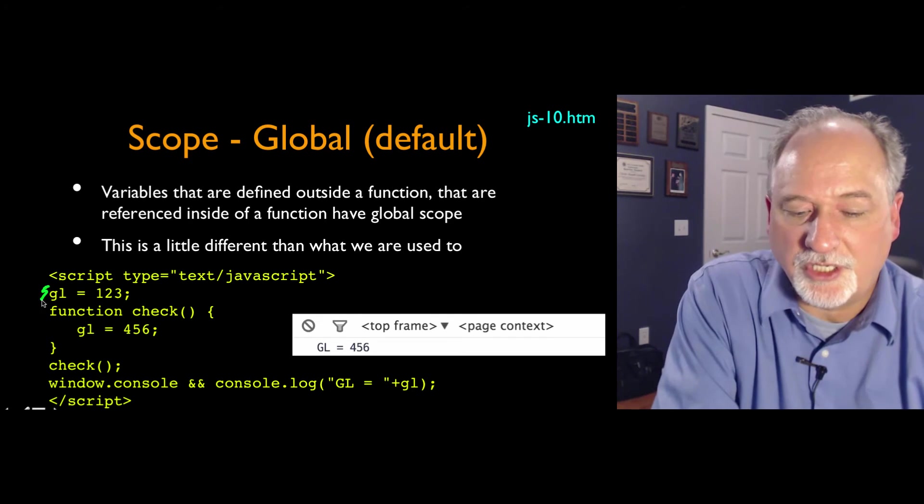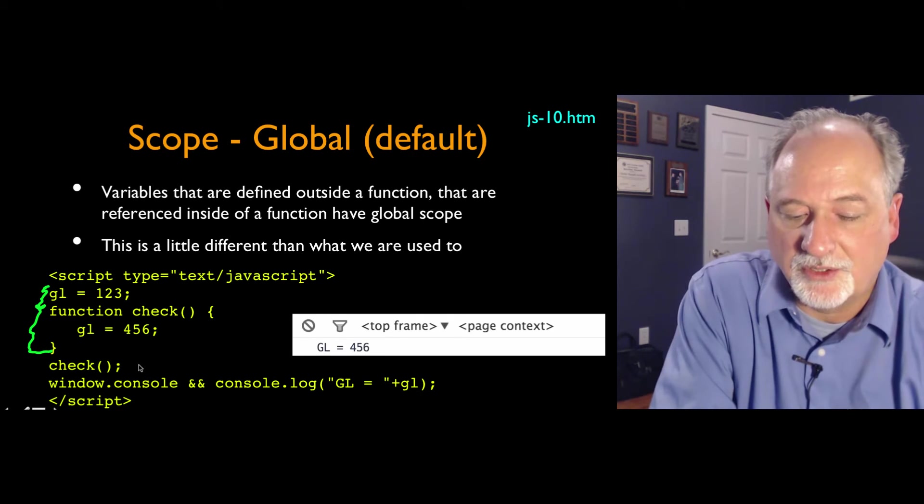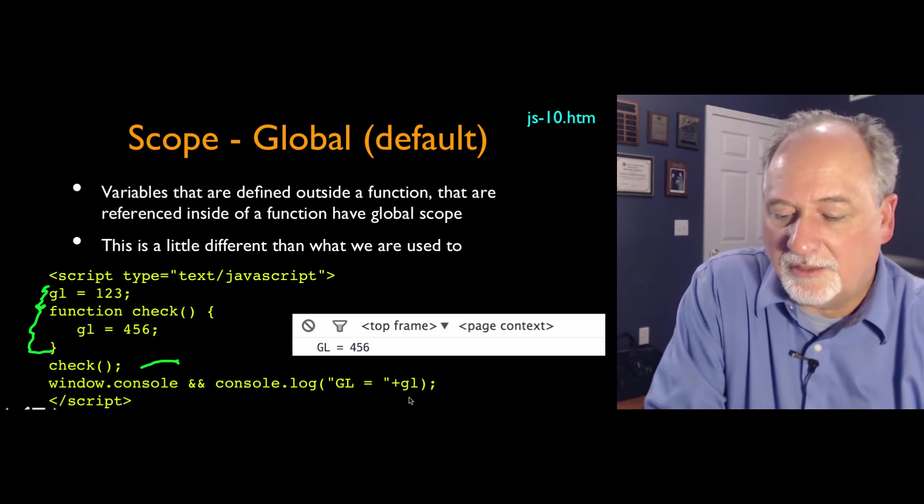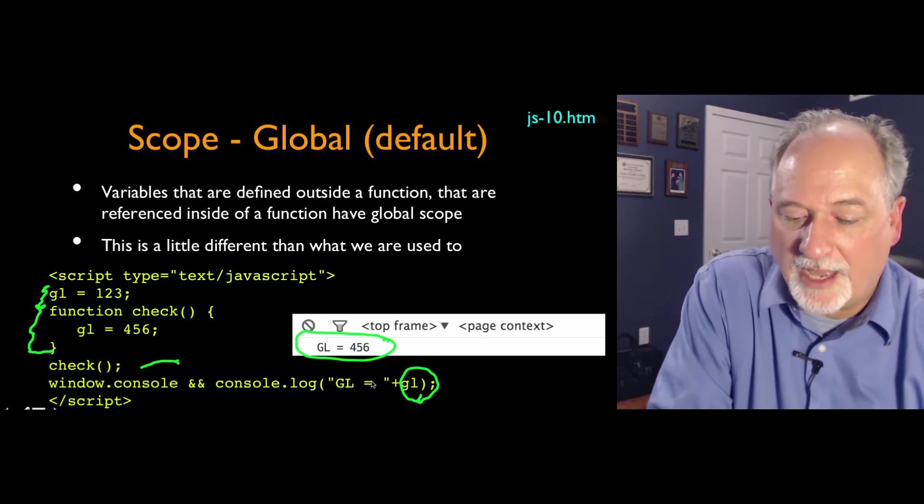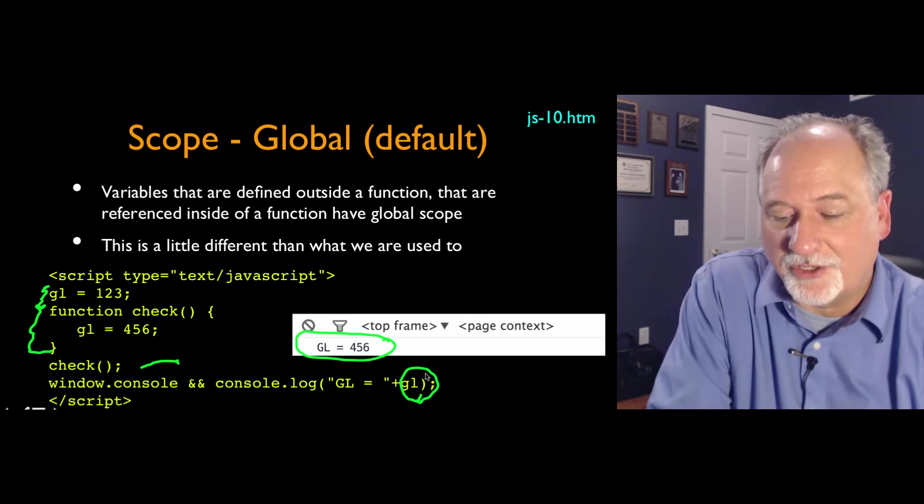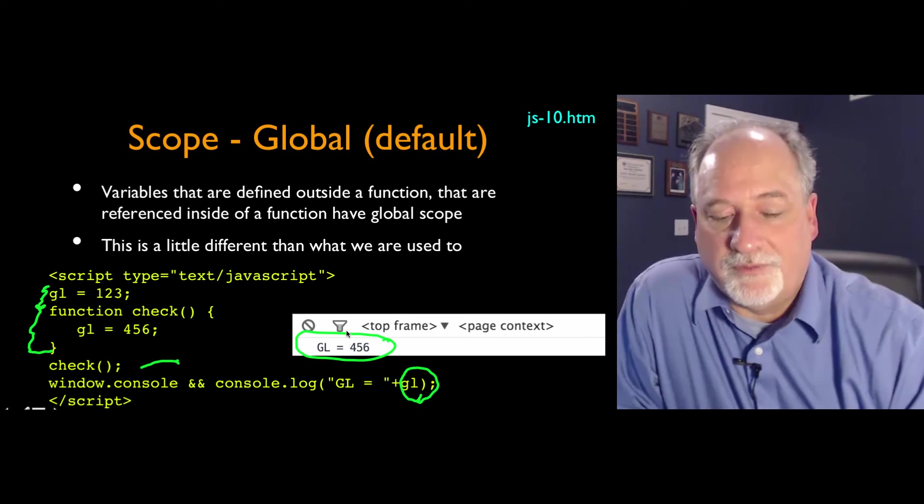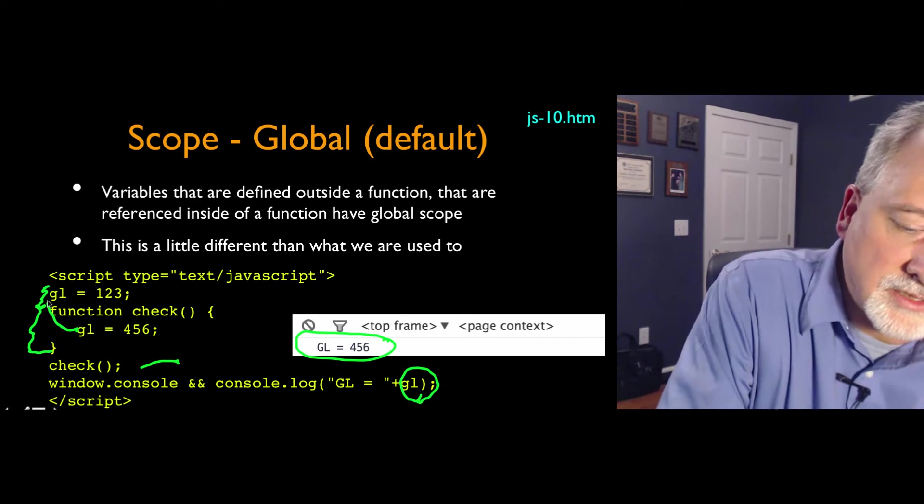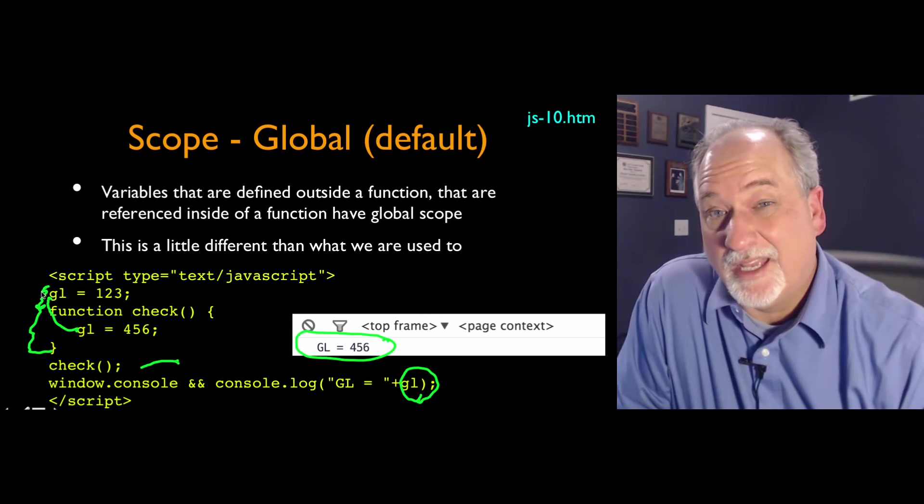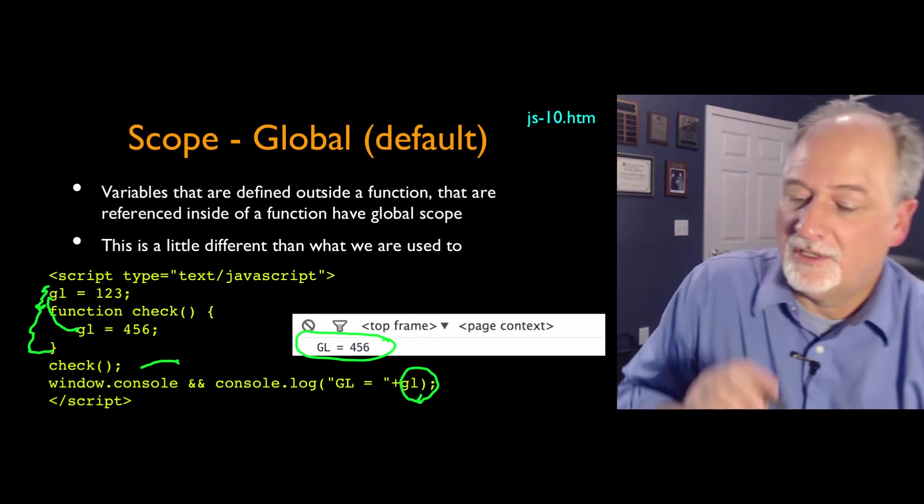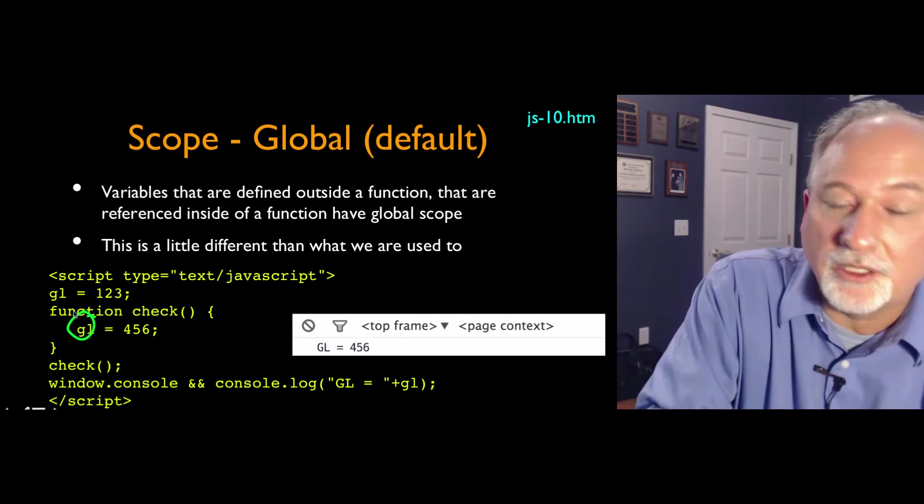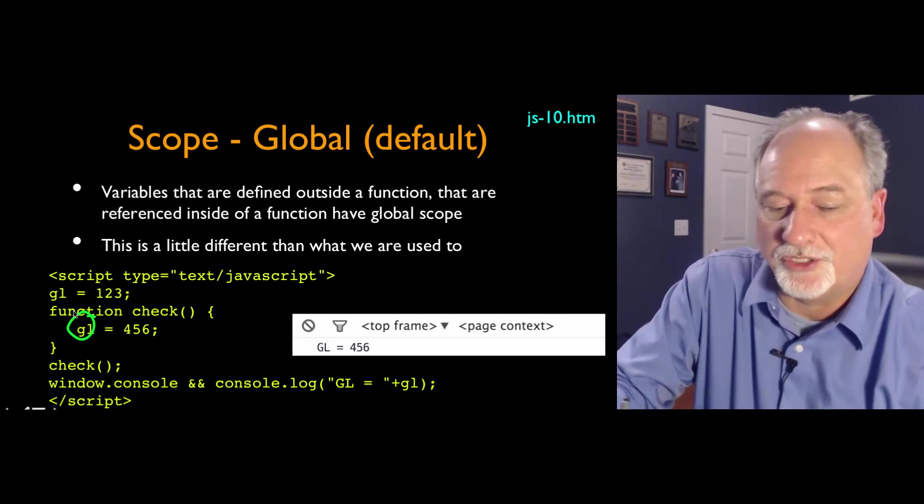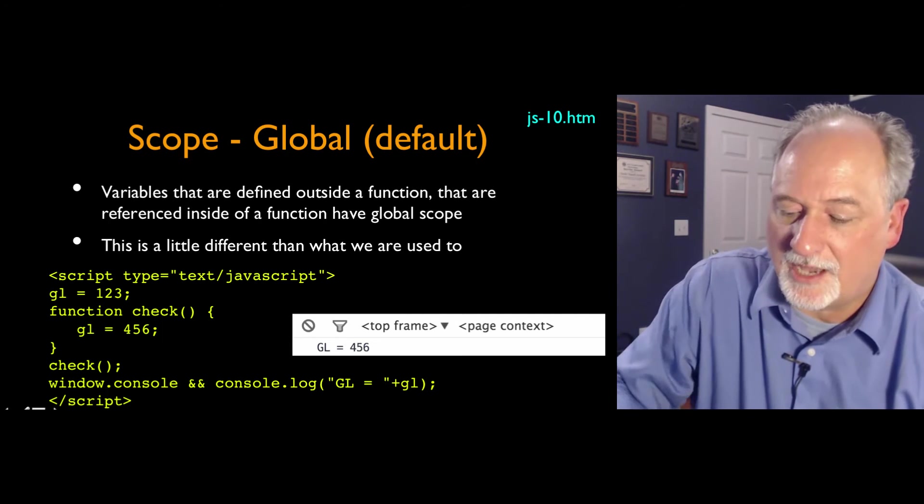So if you look at this code, right, it sets gl to 123. This function is defined that changes gl to 456. We call the function, and then we print out gl at the end. And the global gl, the outer gl, the gl outside the function, has been changed to 456. Because this hooks up with that global variable. Counterintuitive. In every other sane language, this gl would be a local gl within that function. But that's not particularly sane.